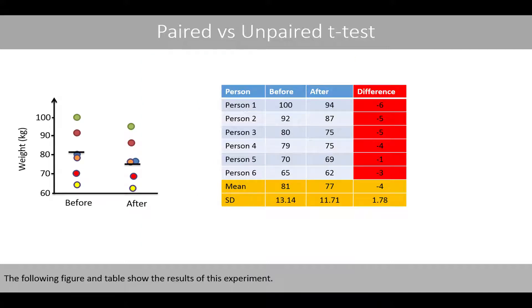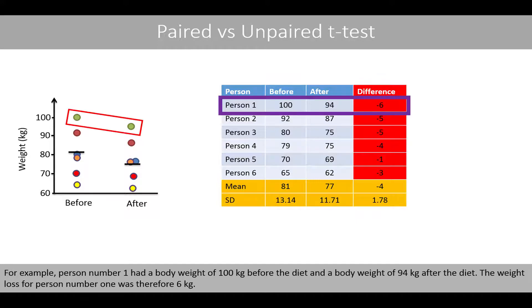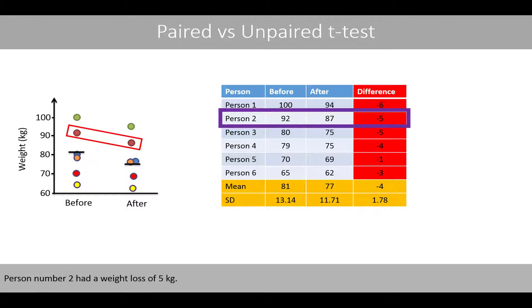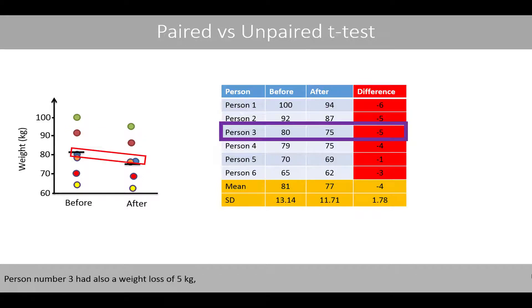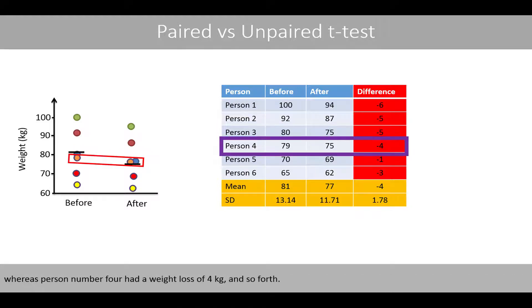The following figure and table show the results of this experiment. For example, person number one had a body weight of 100 kilos before the diet and 94 kilos after the diet. The weight loss for person number one was therefore six kilos. Person number two had a weight loss of five kilos, person number three also five kilos, whereas person number four had a weight loss of four kilos, and so forth.